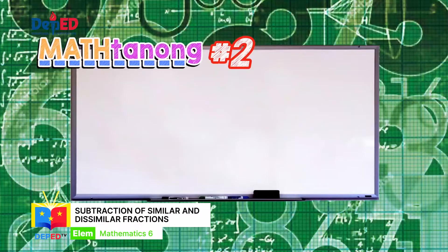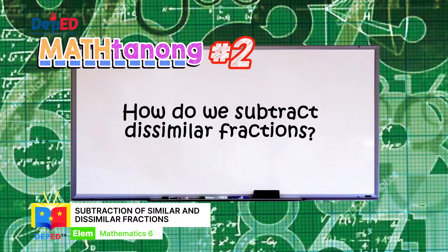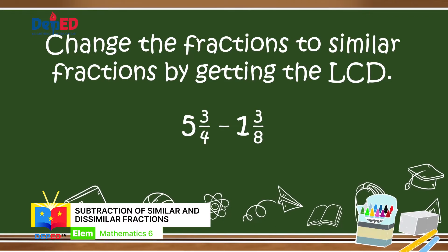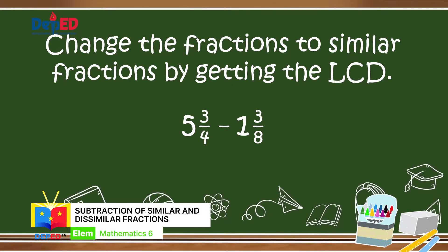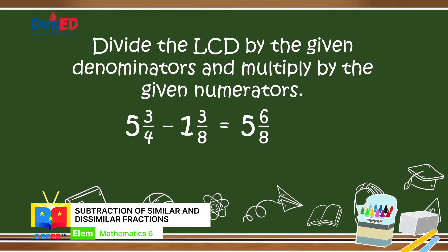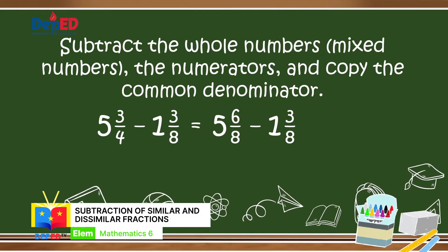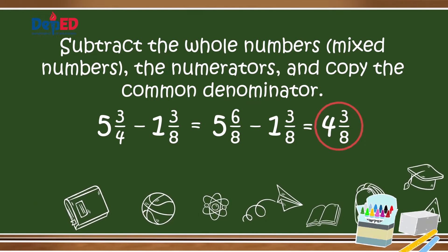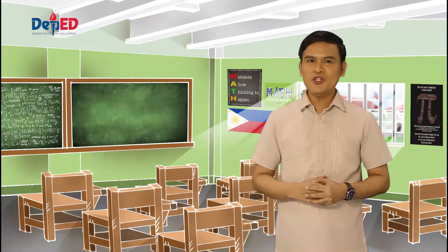Masanong number two: How do we subtract dissimilar fractions? In subtracting dissimilar fractions, change them to similar fractions by getting their equivalent fractions through the least common denominator or LCD. Divide the LCD by the given denominators and multiply by the given numerators. If the given is a mixed number, subtract the whole numbers first, then subtract the numerators and copy the common denominator. Reduce to its lowest term if possible.